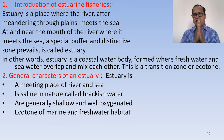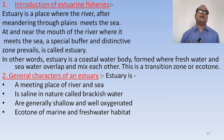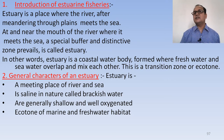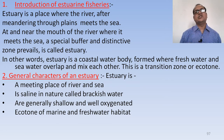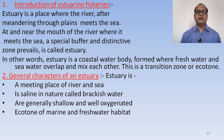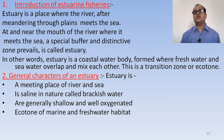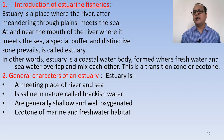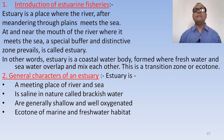First of all, what is an estuary? An estuary is a place where the river, after meandering through the plains, meets the sea — where fresh water and marine water meet each other. At and near the mouth of the river where it meets the sea, a special buffer or distinctive zone prevails. In other words, an estuary is a coastal water body formed where fresh water and sea water overlap or mix with each other.